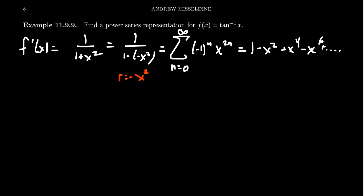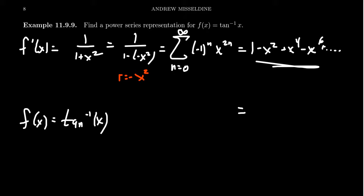What we're trying to do in this video is extend it from rational functions to other functions that are somehow related to rational functions via derivatives. We saw that with the natural log because its derivative is a rational function. And arctangent — its derivative is also a rational function: 1 over 1 plus x squared. So returning back to our problem, if we want to find a power series representation for arctangent, we need to find the antiderivative of this power series.